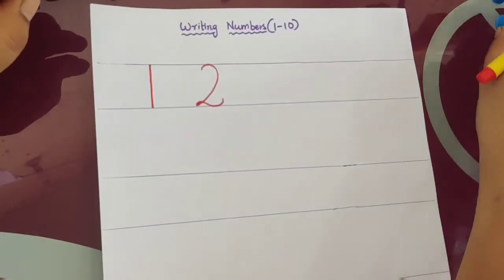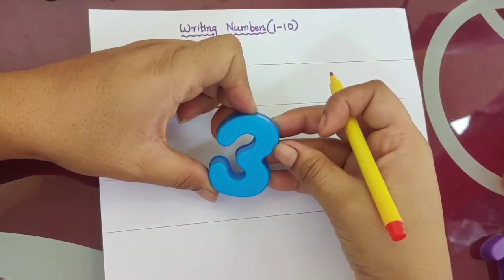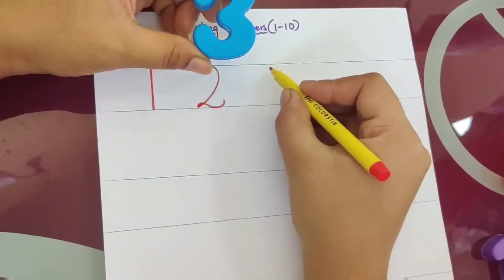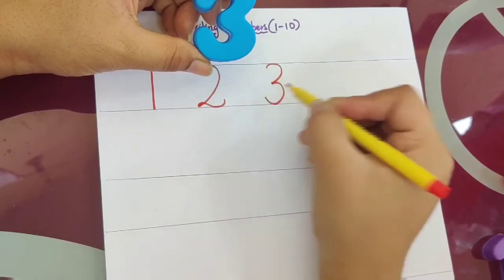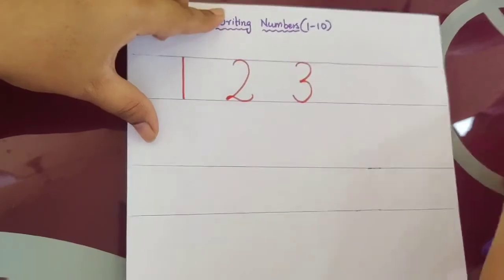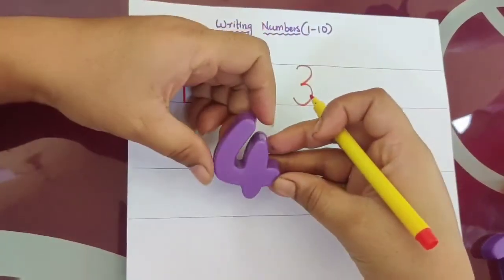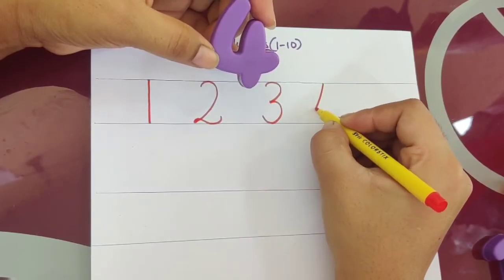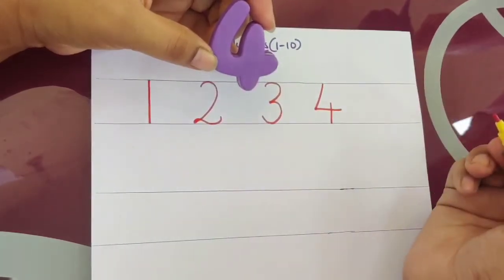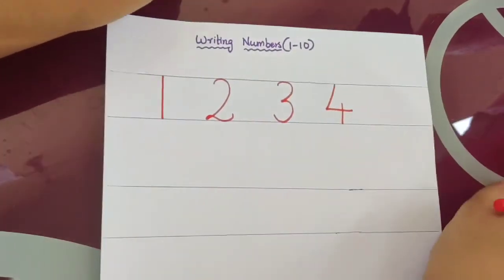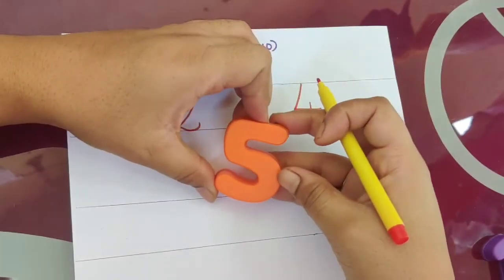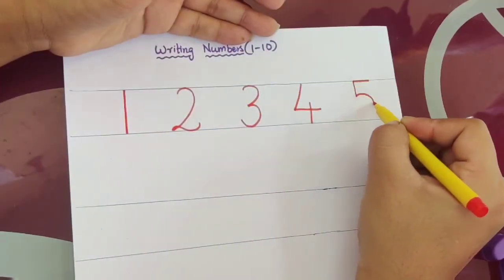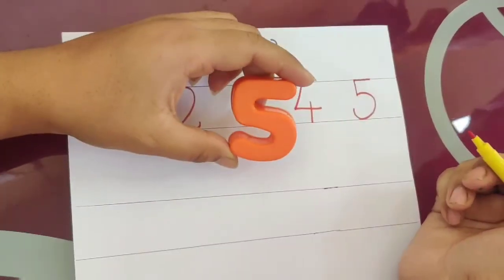Then the next one — which number is this? 3, right. So how do you write 3? Then comes number 4. Which number is this? Number 4, right. So how do you write it? 4. This is number 4. The next one — which number is this? Number 5. So how do you write it? Number 5. This is number 5.